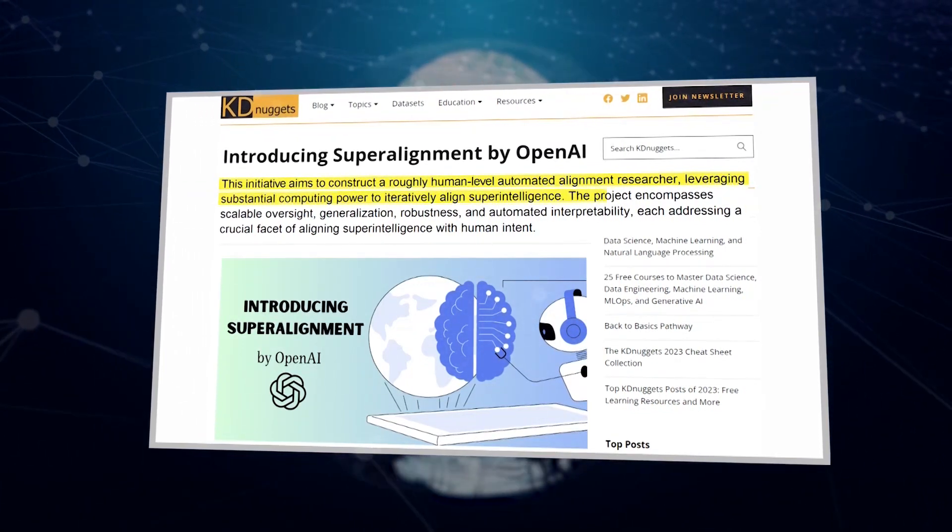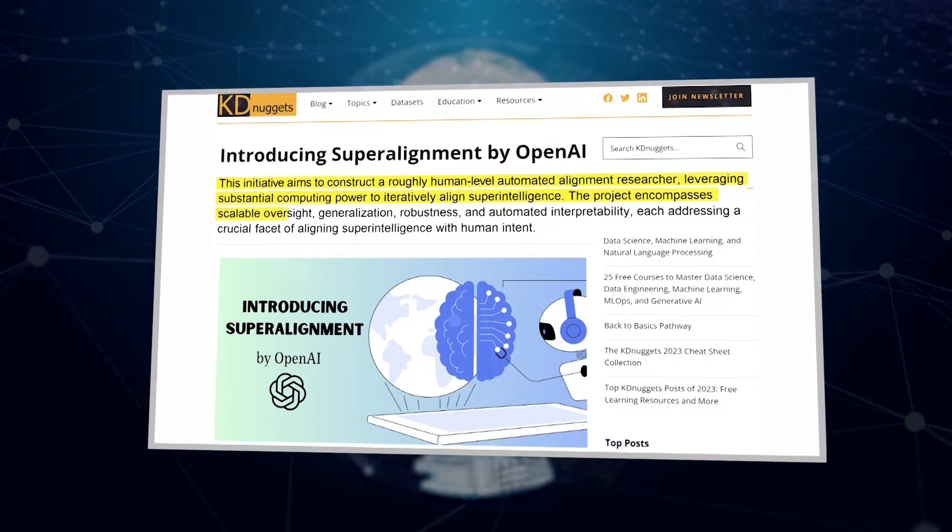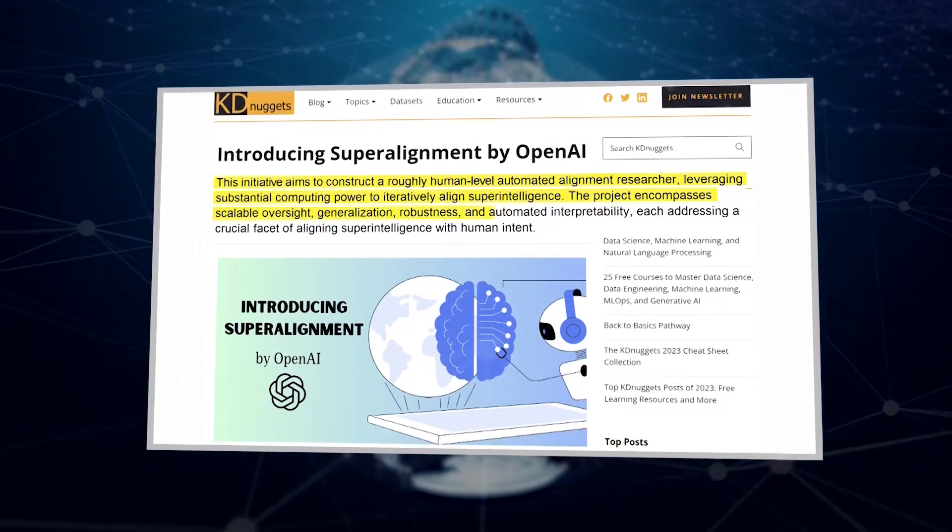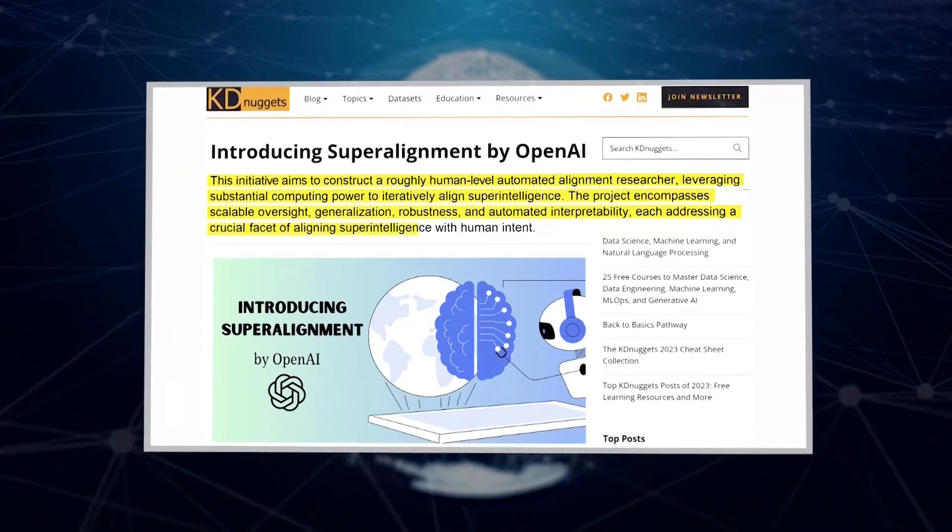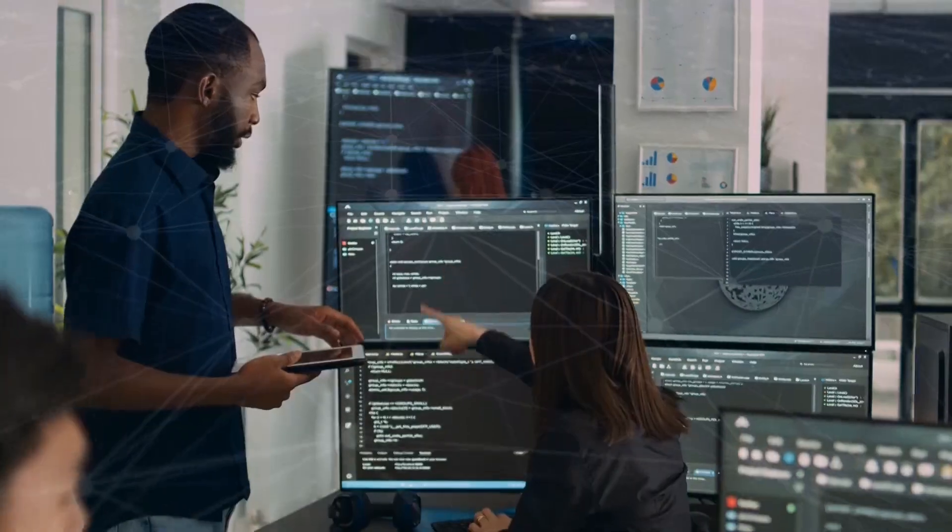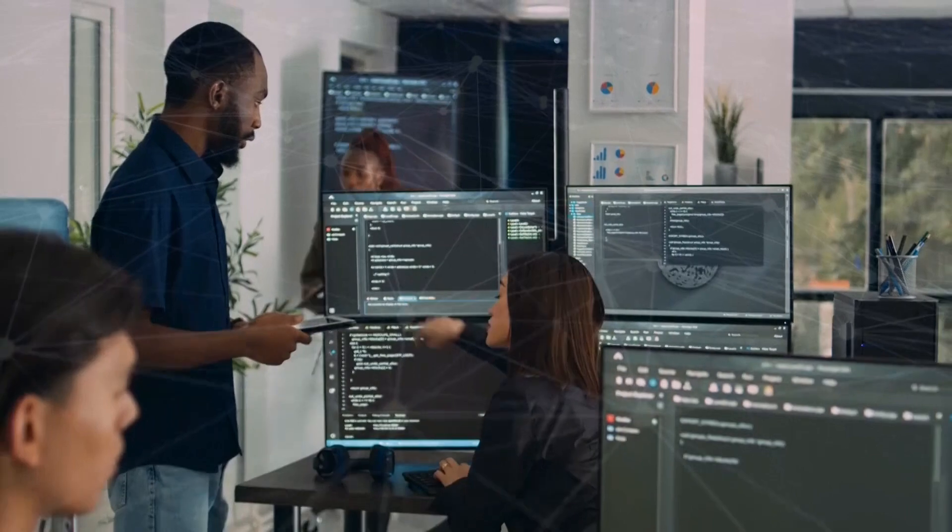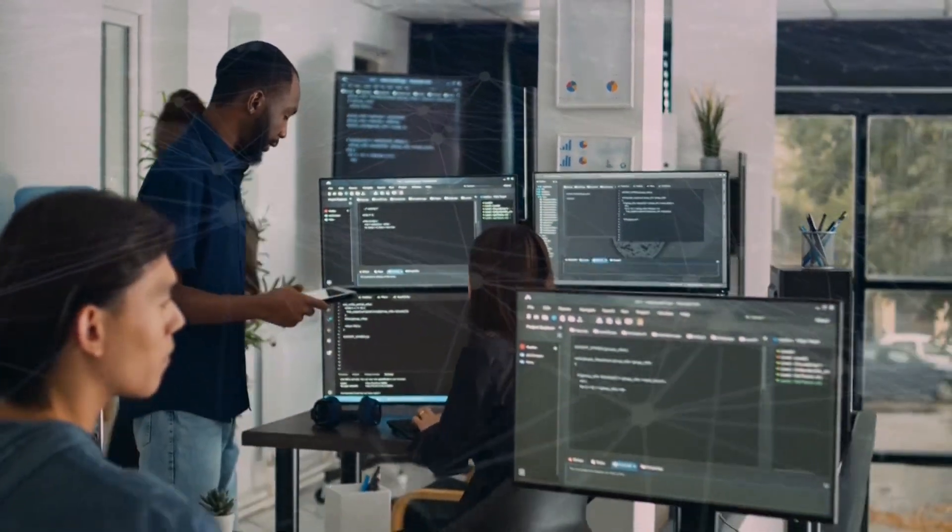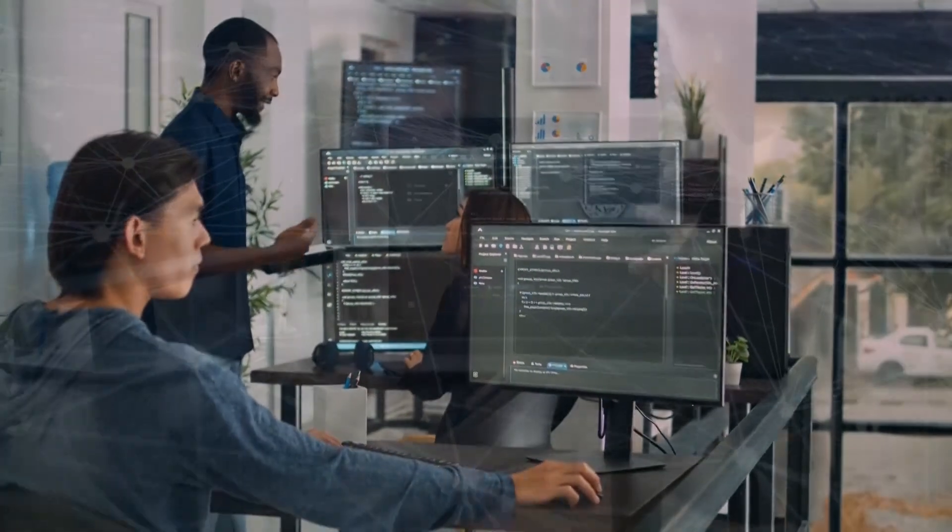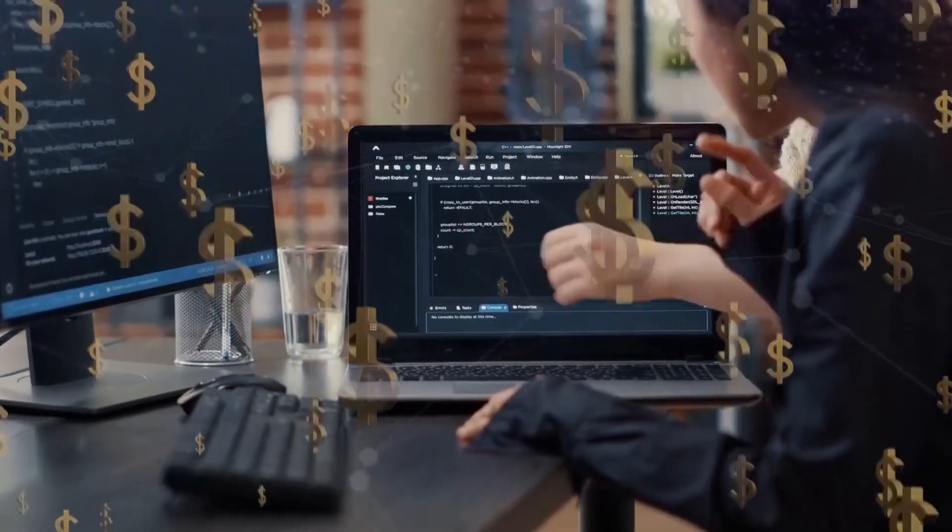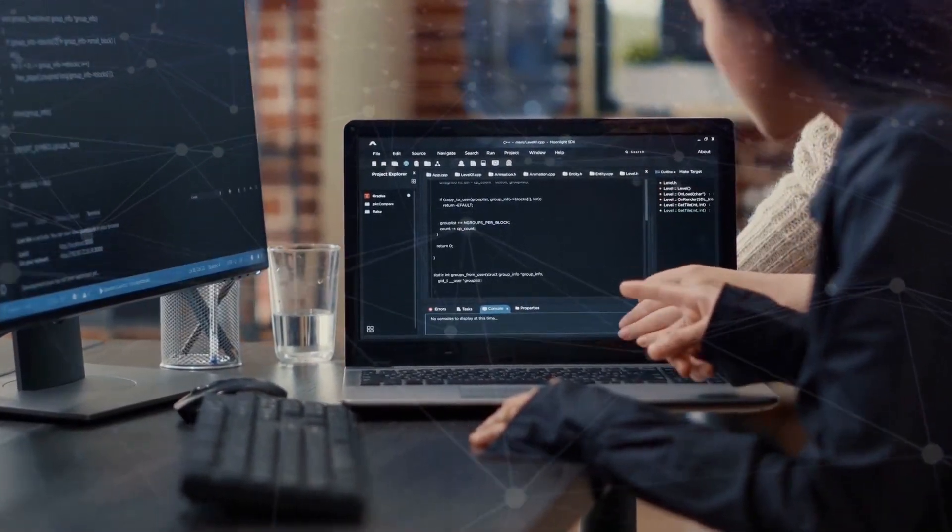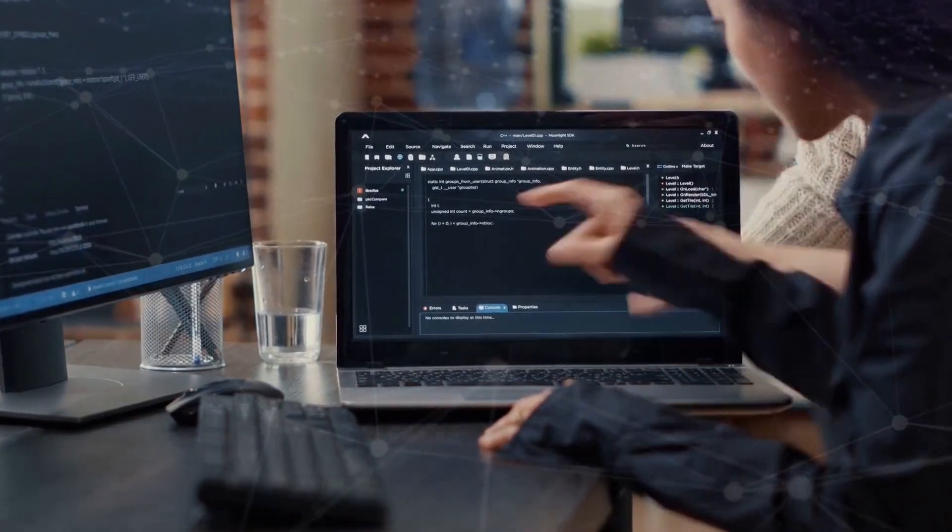The project encompasses scalable oversight, generalization, robustness, and automated interpretability, each addressing a crucial facet of aligning superintelligence with human intent. Tsutskever is optimistic that super alignment is a solvable challenge, emphasizing the need for collective efforts and collaboration within the AI research community. To support this, he has launched $10 million in grants dedicated to technical research focused on the alignment and safety of superhuman AI systems.